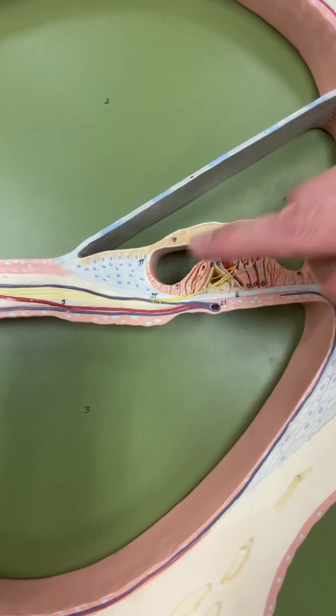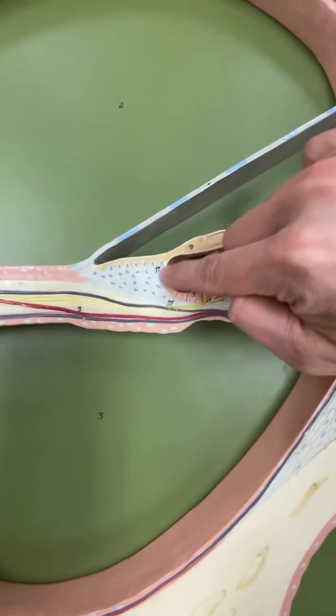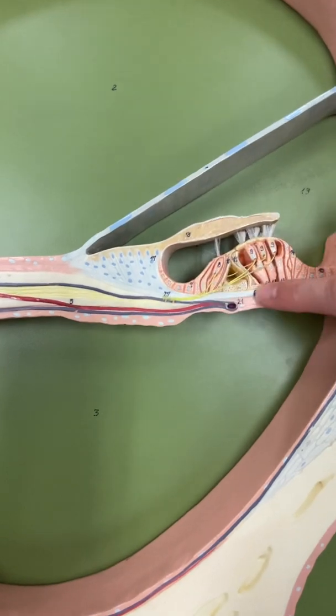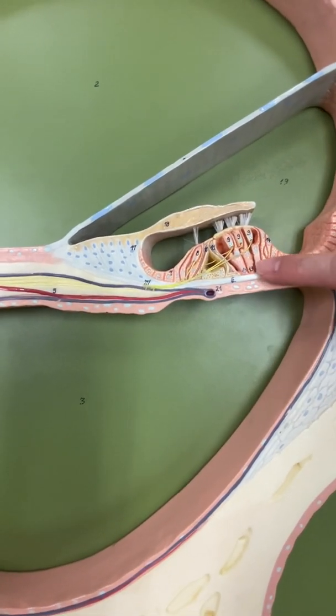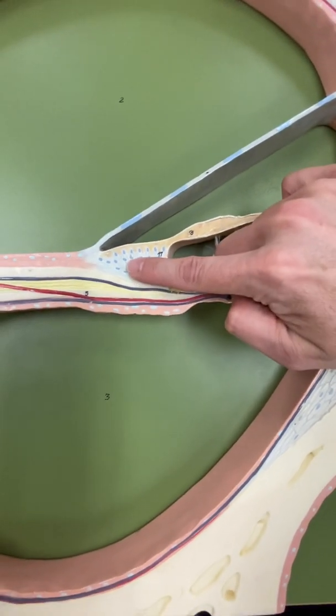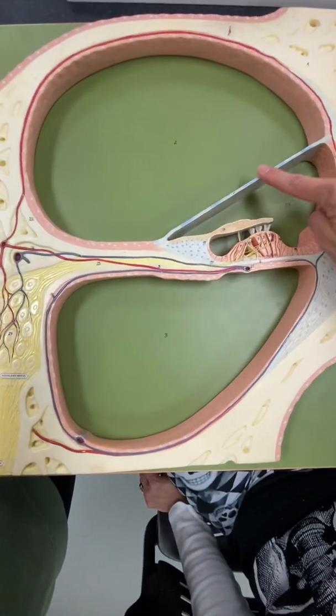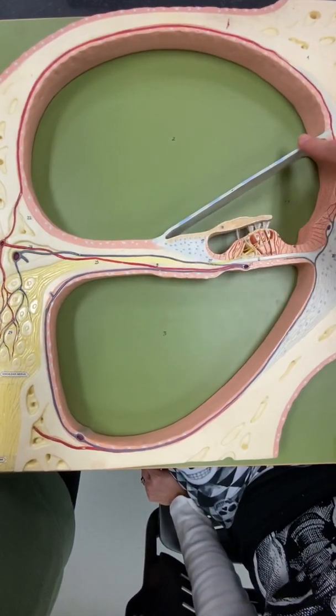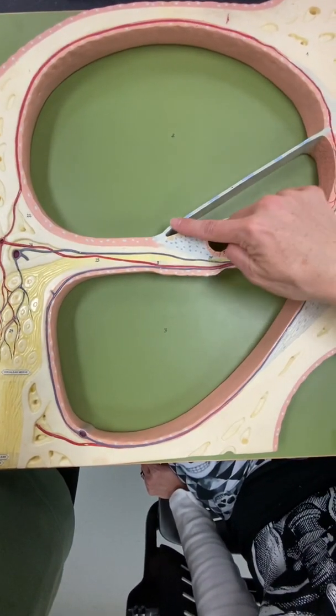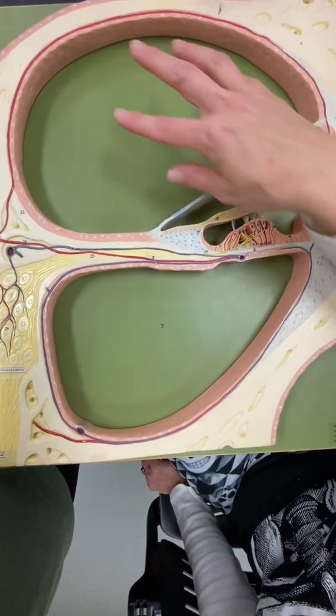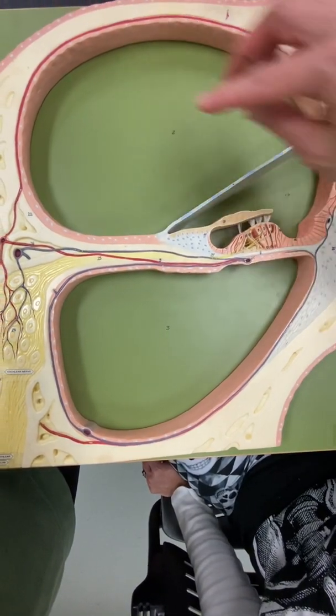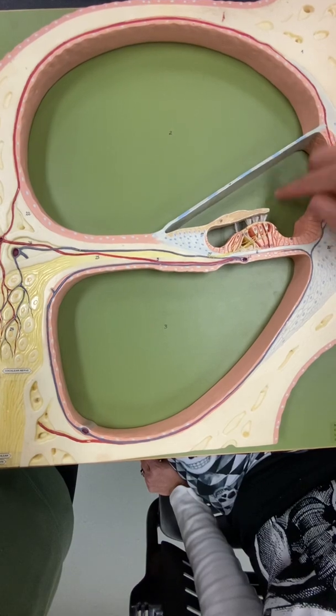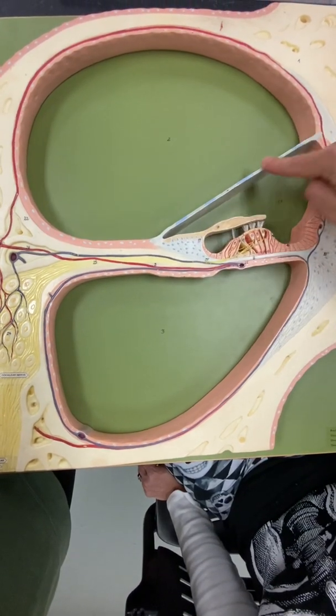Then, we have the basilar membrane, which is this guy right there. You can see the dots, and then it wraps underneath here. That's all the basilar membrane. And then, the vestibular membrane is this one. So, vestibular, we've heard that before. The vestibular membrane is what separates the scala vestibuli from the scala media. So, that's our vestibular membrane.